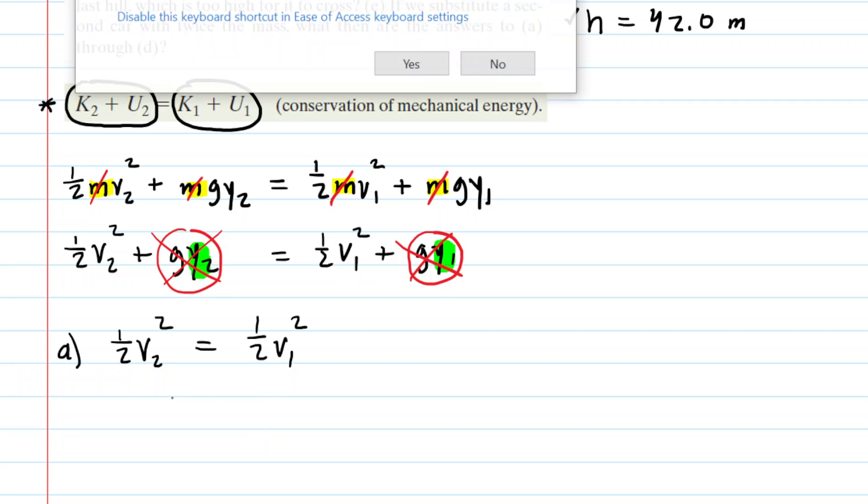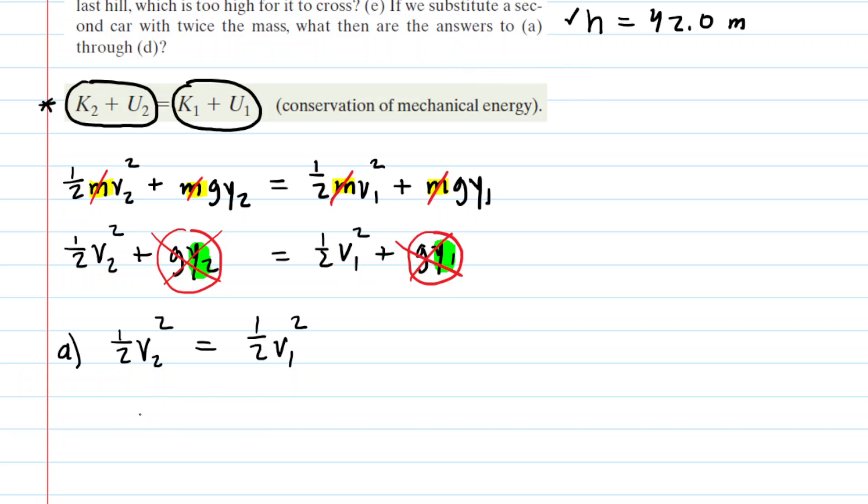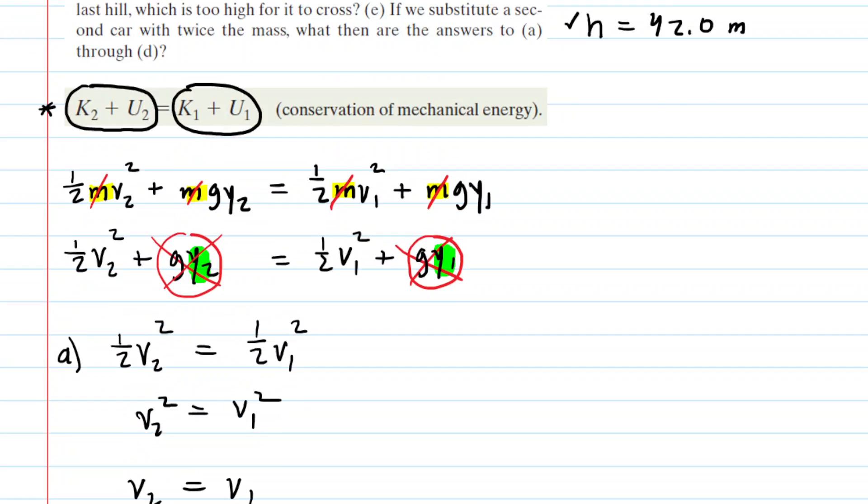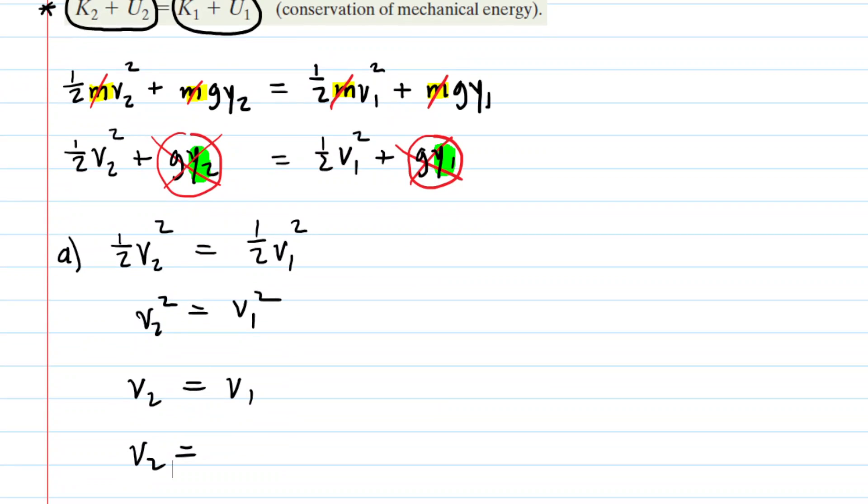Indeed, if we multiplied both sides of the equation by two, then those one-halves would cancel. And then if we took the square root, we can see that the speed of the car at position two is equal to the speed of the car at position one. Now the speed of the car at position one was that initial speed that was given in the problem. That was the 17 meters per second. So that's it. Part A is solved. The car is moving with the same speed that it had started with.